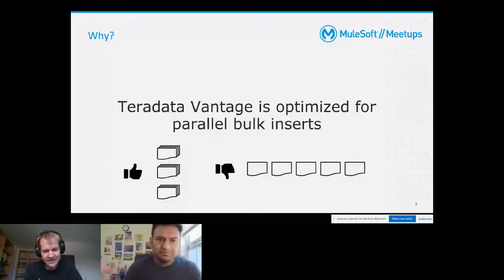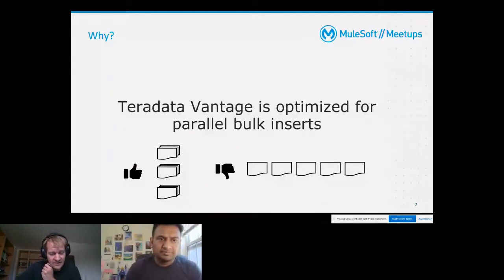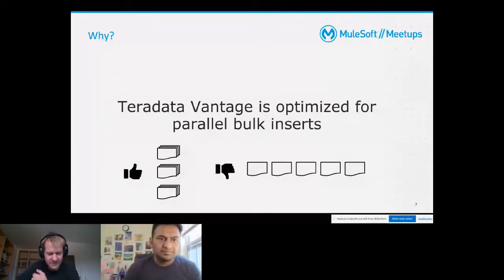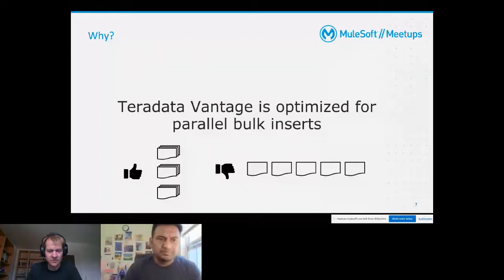Teradata absolutely likes it when you are supplying data in a parallel way and in bulk - numerous messages or data rows per request. Teradata absolutely dislikes it when your data is split into single rows or single messages or processed sequentially. This is exactly what the Apache Kafka batch message listener will enable us to do: to work with Teradata Vantage for exactly the purpose it has been designed for.